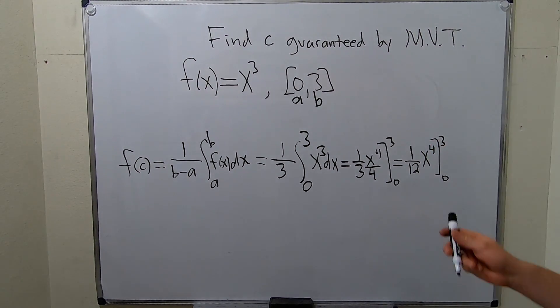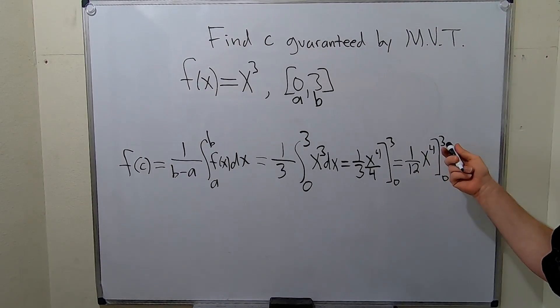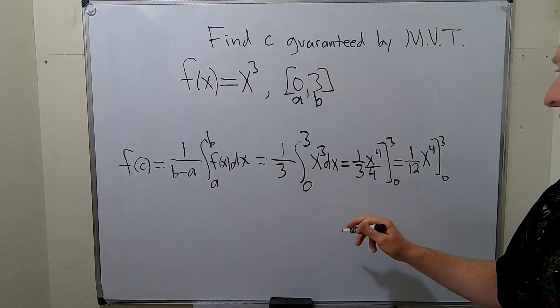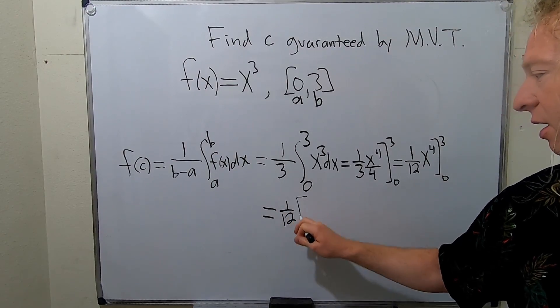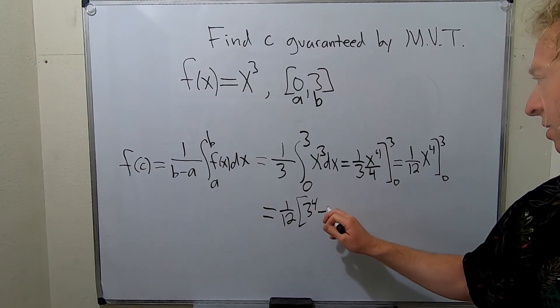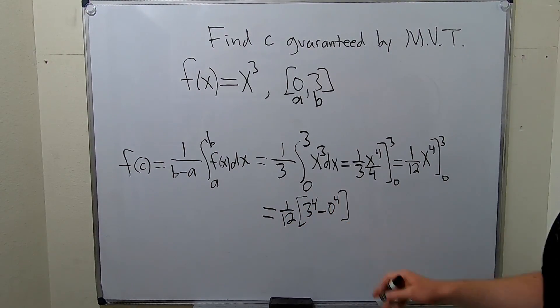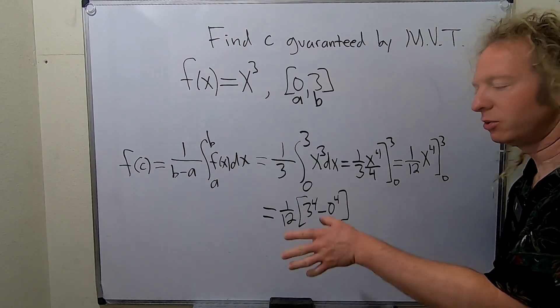Big numbers here. So you got to plug in the 3, subtract, plug in the 0. So this is equal to 1 over 12, this is 3 to the 4th minus 0 to the 4th. Notice how I left the constant out. You can do that, right? You can let this hang out and then plug in the numbers.